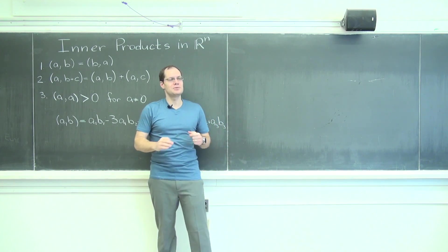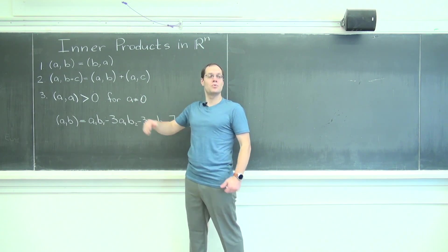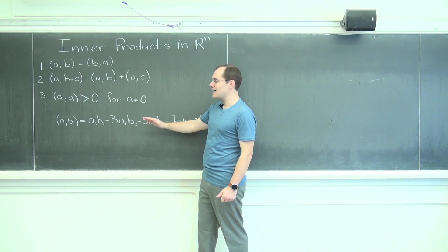So that's what distributivity dictates, that you only have terms of this kind, where you have one A entry and one B entry. And because of that, you can always write any candidate for an inner product in matrix form like this.